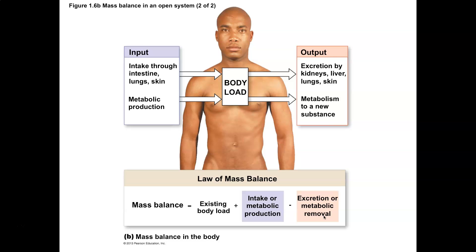Intake is a very easy term — it really just means to be brought into the body: bringing in water, bringing in nutrients through the digestive system, being absorbed into the circulatory system, taking things in through our lungs, absorbing through our skin. These are all intake mechanisms. Metabolic production involves the chemical reactions that take place within the body — we have the ability to produce certain molecules, like carbon dioxide production and lactic acid production, and those affect your overall mass balance.